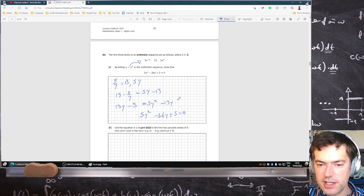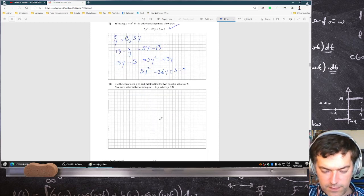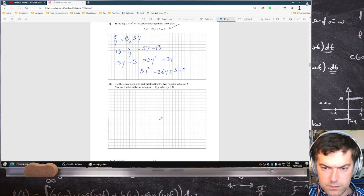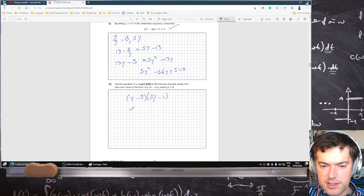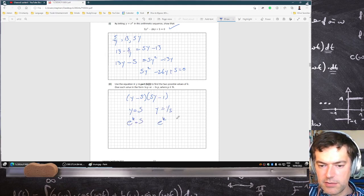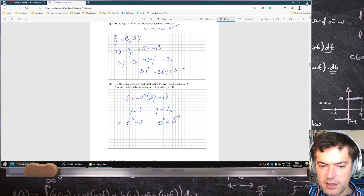Use the equation to find two possible values. Okay, so if you factorize this, you get (y minus 5) and (5y minus 1). That means y equals 5 or y equals 1 over 5, which means e^k equals 5 or e^k equals 5 power minus 1. Natural log both sides.